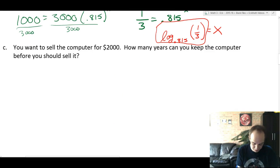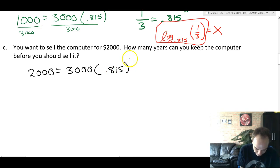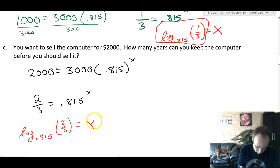If you want to sell the computer for $2,000, how many years can you keep the computer before you should sell it? It's gonna be a very similar setup. So we'll set up 2,000 equals 3,000 times 0.815 to the x. Same process, we're gonna divide by 3,000. We're gonna get 2/3 equals 0.815 to the x. So just like before, log base 0.815 of 2/3 will equal x.